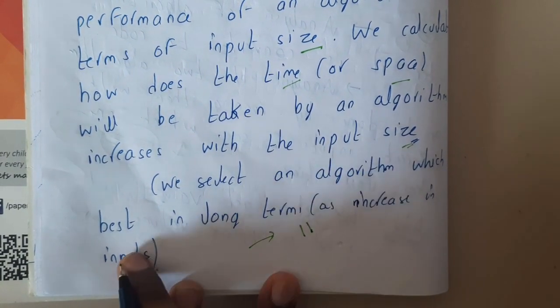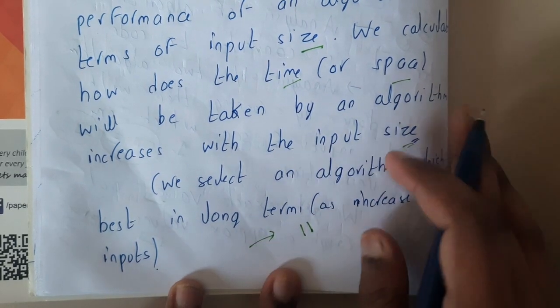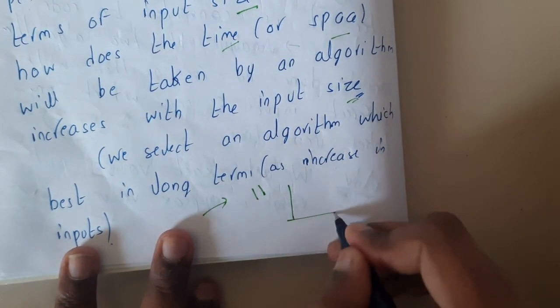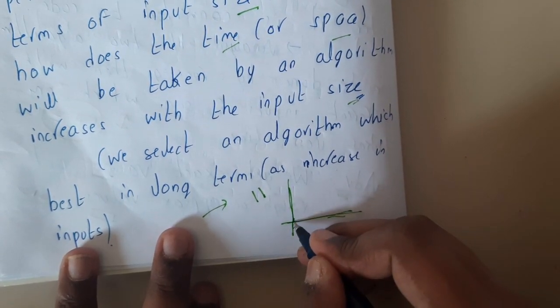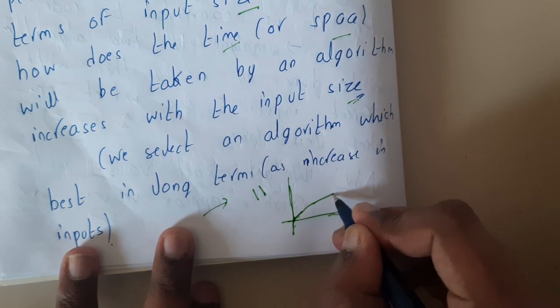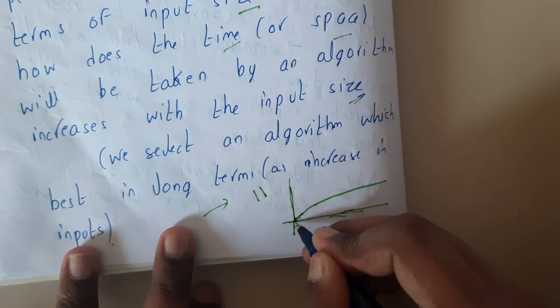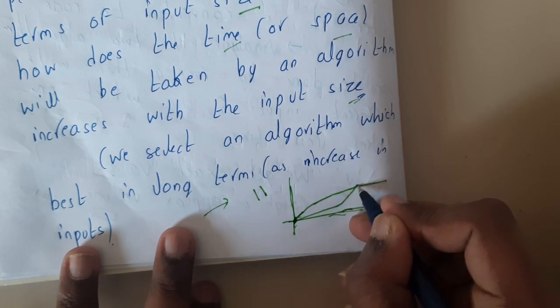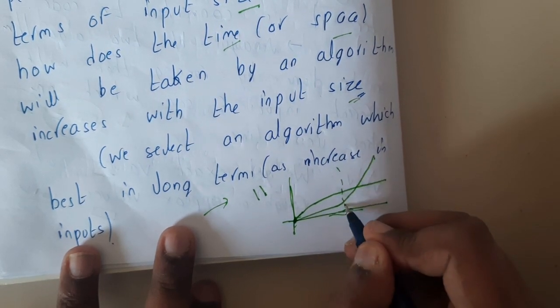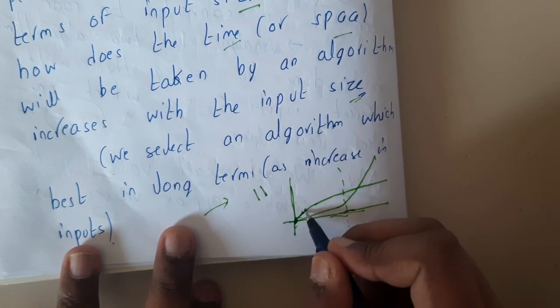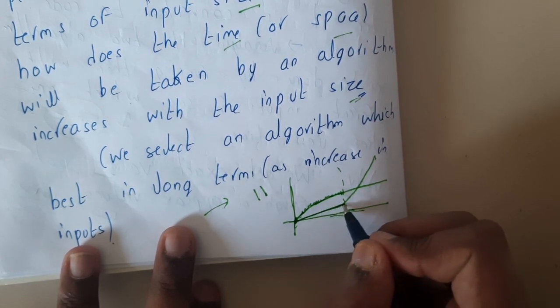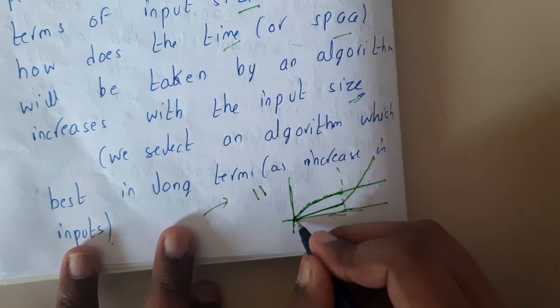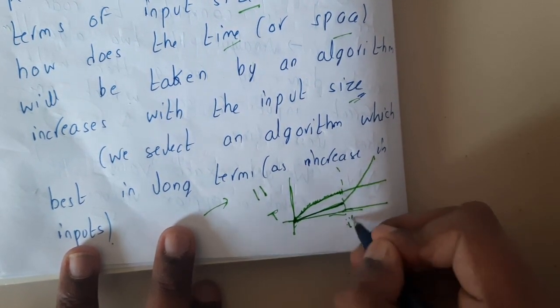We select an algorithm which is best in long term as increasing an input. I'll be just giving you a small example - this is just for example guys, we'll be discussing about these things in our future lectures. Assume that an algorithm is running like this, so it is constantly or slowly increasing. Another algorithm is in this way and it just bulks directly up. If you observe till here, you will be assuming that this algorithm is not doing so well, this algorithm is doing superb - how much slowly it is increasing with respect to time and execution.